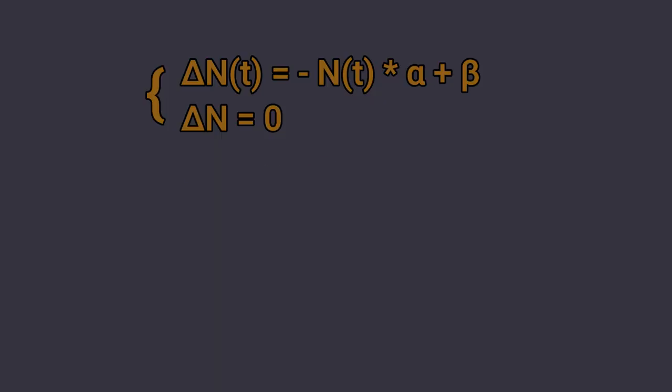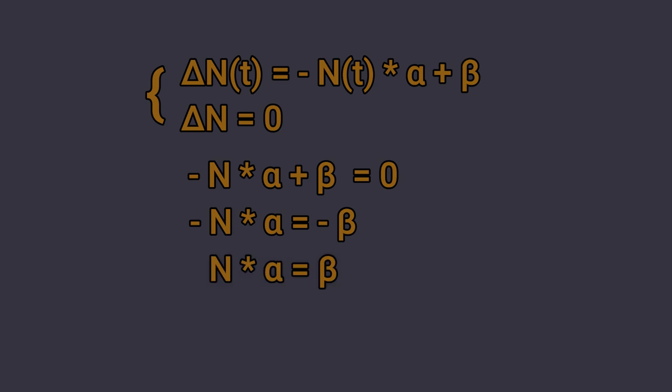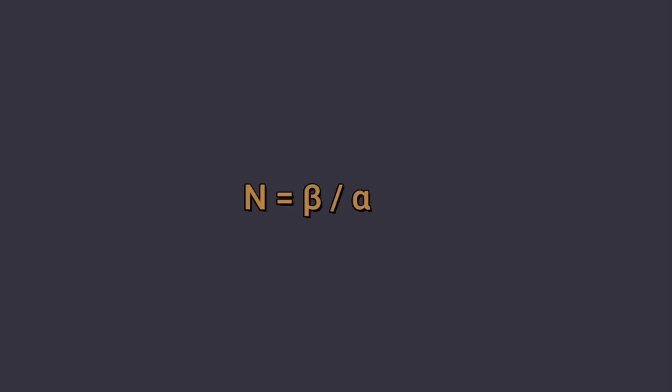But this is exactly what an equilibrium is. So let's set delta N equal to zero and see what happens. We calculate that the equilibrium point N* equals beta divided by alpha. With this in mind, what do you think will happen if we double the birth chance?